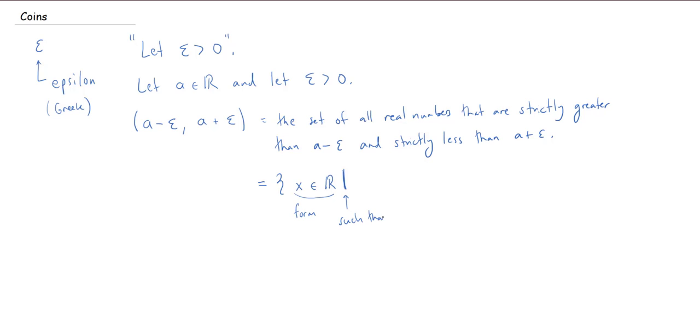Okay, and then what comes after it is going to be a condition or conditions on X. Okay, in this case, we're going to have two conditions. The first condition on X is that it needs to be strictly greater than A minus epsilon.